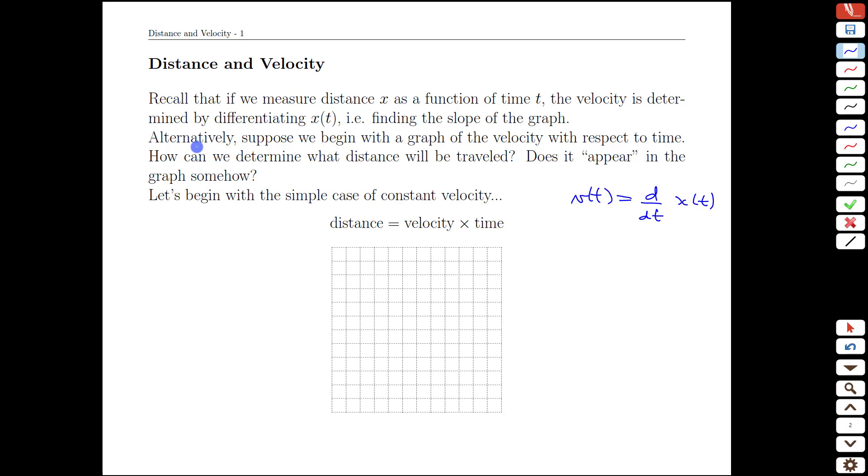We're now going to ask the question: what if we begin with the graph of the velocity and are trying to work our way backwards towards position? How can we determine how far we've traveled? Most importantly, to get started, we're interested in how we would see velocity going into position change on a graph.